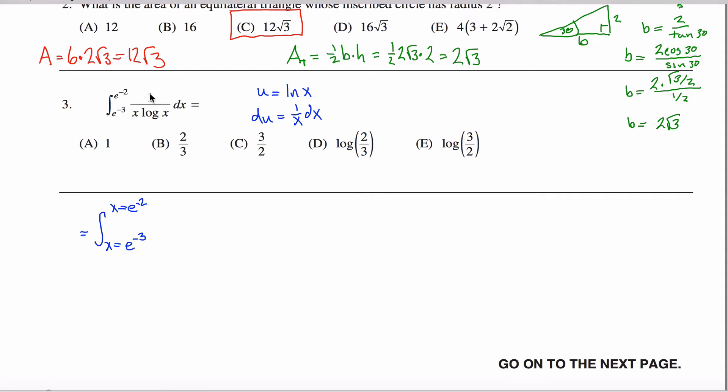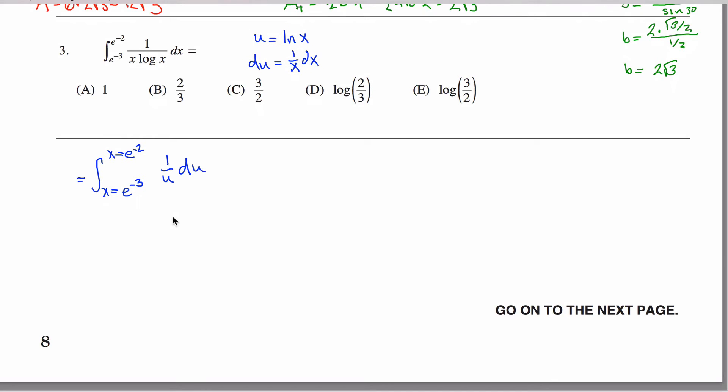And now if I substitute, I got my 1 over x dx, so that all turns into my du, and then I have 1 over natural log of x here, so what I'm saying is this is just 1 over u du. And if you can get to here, you're in pretty good shape because this is probably an antiderivative that you know.